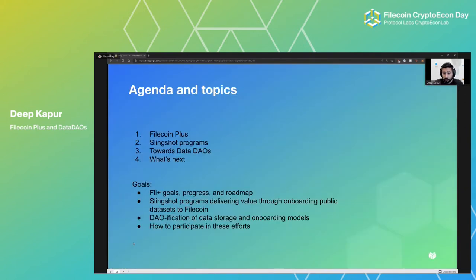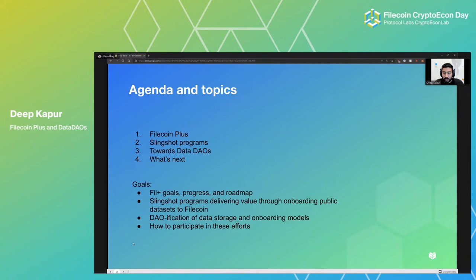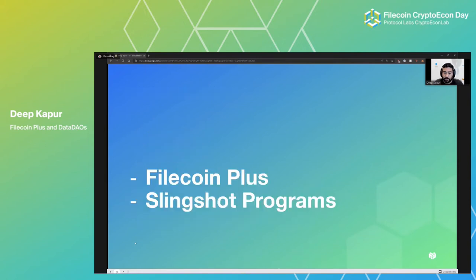What I want to cover today in the short 20 minutes we have: number one, Filecoin Plus — for those unfamiliar, we'll go over the core concepts of the program, how it works, how the pieces fit together. We'll talk through Slingshot and the various Slingshot-related programs that exist today. And at the end, touch a little bit on how these things are moving towards DAOification, and how you can get involved and what's next.